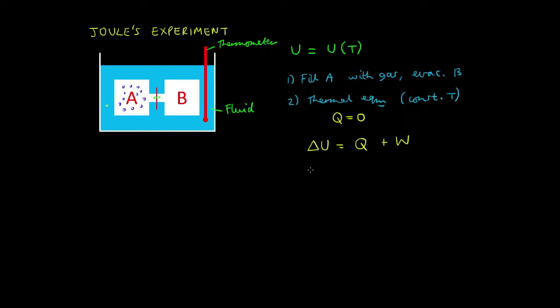So the next step is to open that stopcock such that the gas can flow from A to B until the pressure in chamber A and B is the same. So we have a flow of gas that goes into this chamber.